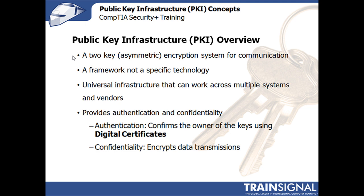PKI is a two-key encryption system. Having two keys, the word for that is asymmetric. It's important to note that PKI is a framework, like a guideline, that different systems, vendors, and technologies can interpret and use to provide authentication and confidentiality in their data transmissions. So it's a set of rules — you have to have two keys. The key length is up to you, the encryption algorithm you use is up to you, but you have to have those two keys.